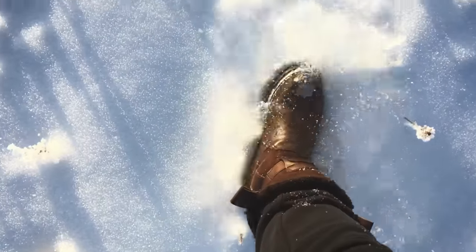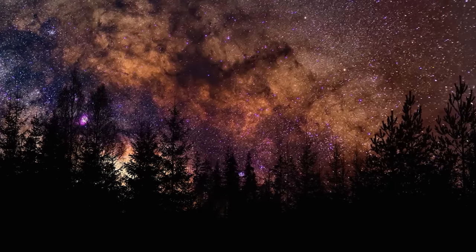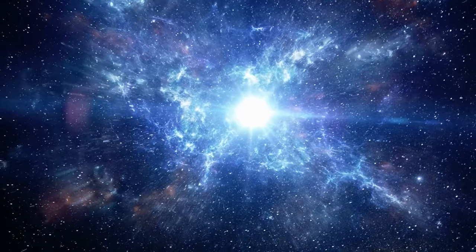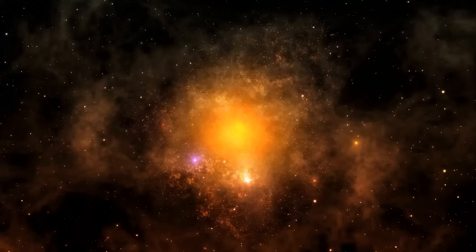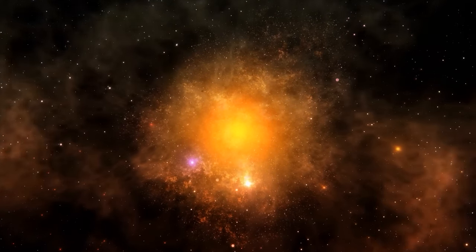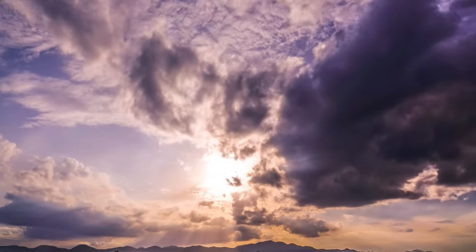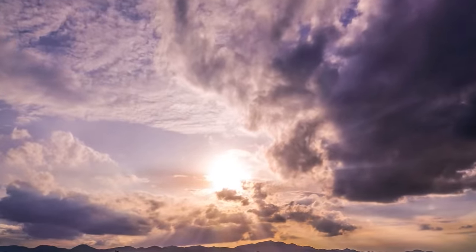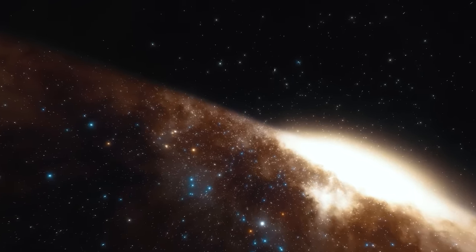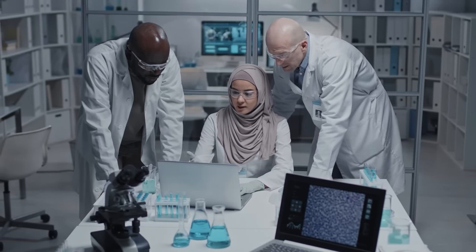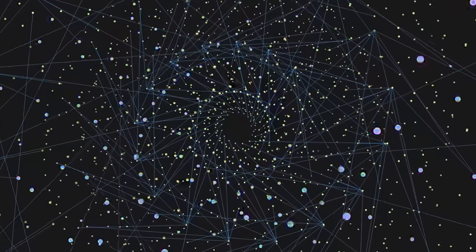Delving deeper into the ancient cosmos, we find relics like population three stars. While no direct observation of these first generation stars has been made, they are believed to have formed a few hundred million years after the Big Bang. Composed almost entirely of hydrogen and helium, these behemoths were much larger and hotter than stars today, living fast and dying young in spectacular supernova explosions. The debris from these explosions went on to seed subsequent generations of stars with heavier elements, setting the stage for the complex cosmic dance that led to galaxies, planets and eventually life. In our quest to understand the universe's origins, we also study the distribution of galaxies, clusters and cosmic voids. By mapping these vast structures, scientists can trace back the gravitational forces at play in the early universe, shedding light on the mysterious dark matter that binds these cosmic entities together.